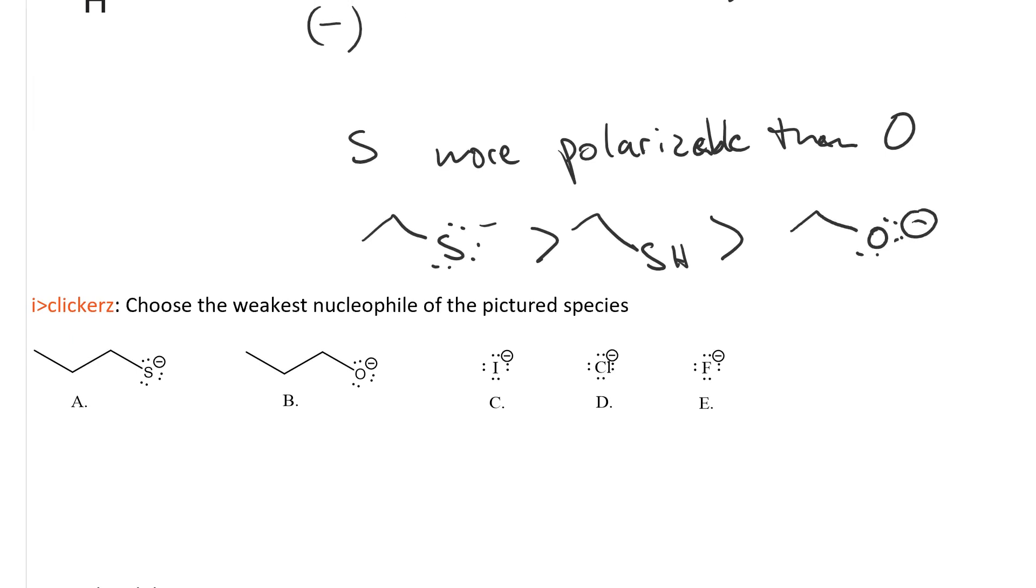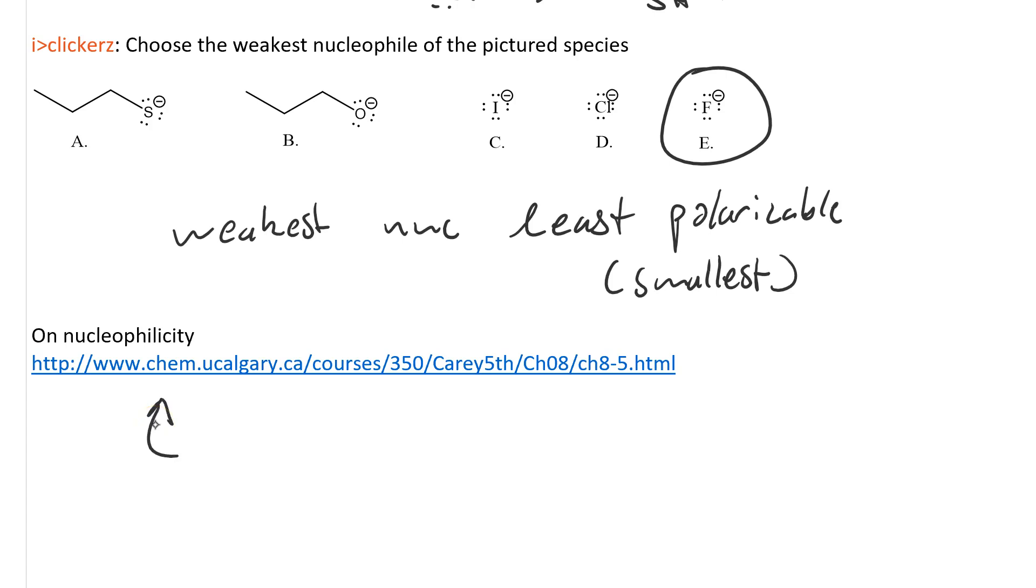Go ahead and answer this clicker question. Pause your video for a second. Do you have the answer? The weakest nucleophile will be the least polarizable. In this case, the smallest of these anions. Fluoride. Check out this link if you have time. It explains nucleophilicity really well.